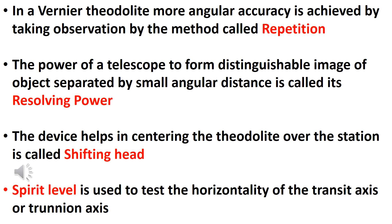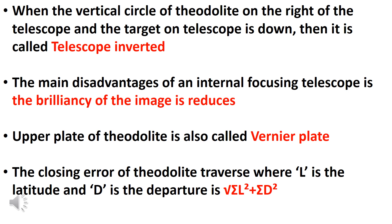The vertical circle of the theodolite is on the right of the telescope and the target on the telescope is down — this is called telescope inverted. When operating in the normal telescope position, the telescope is directed to the right angle.